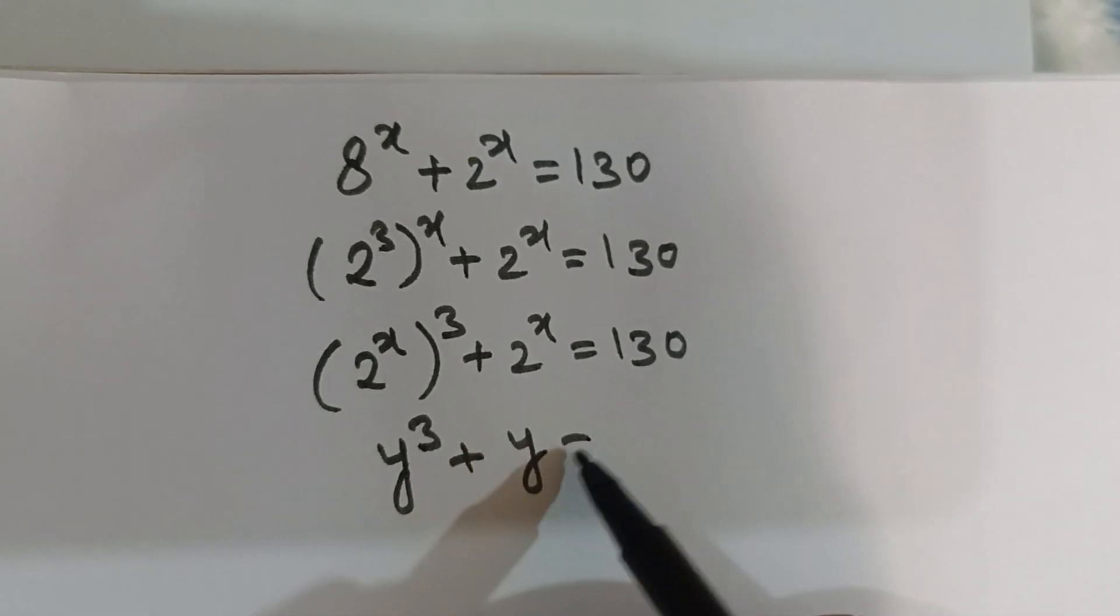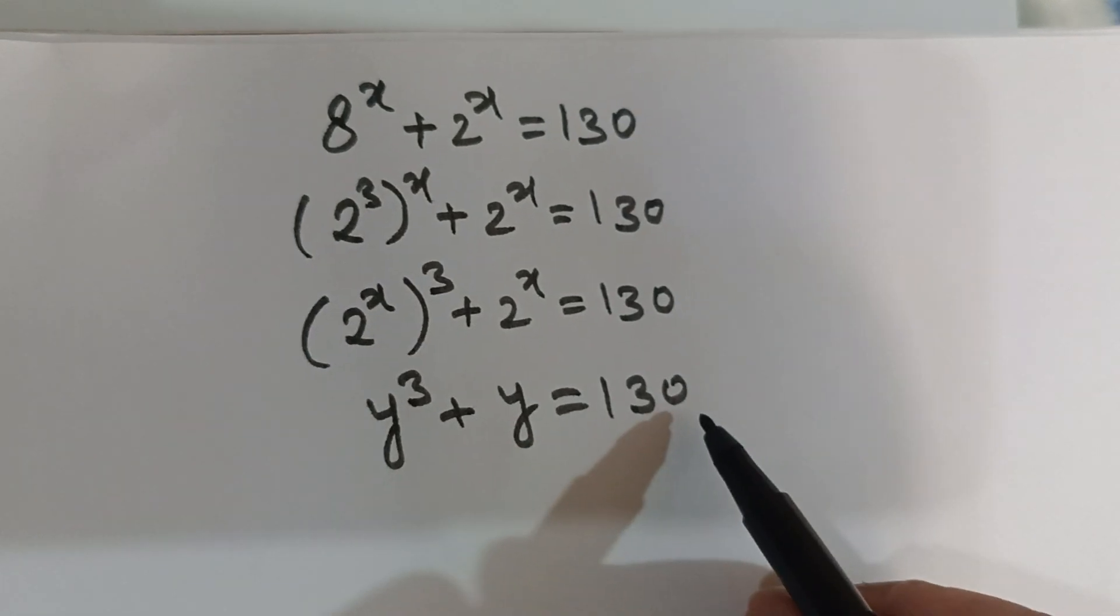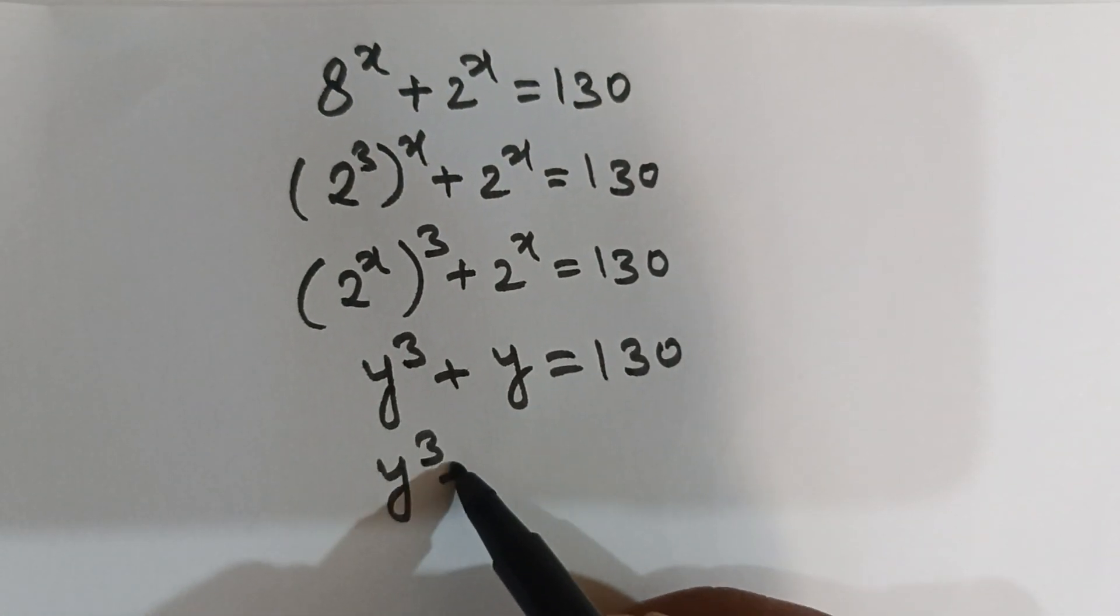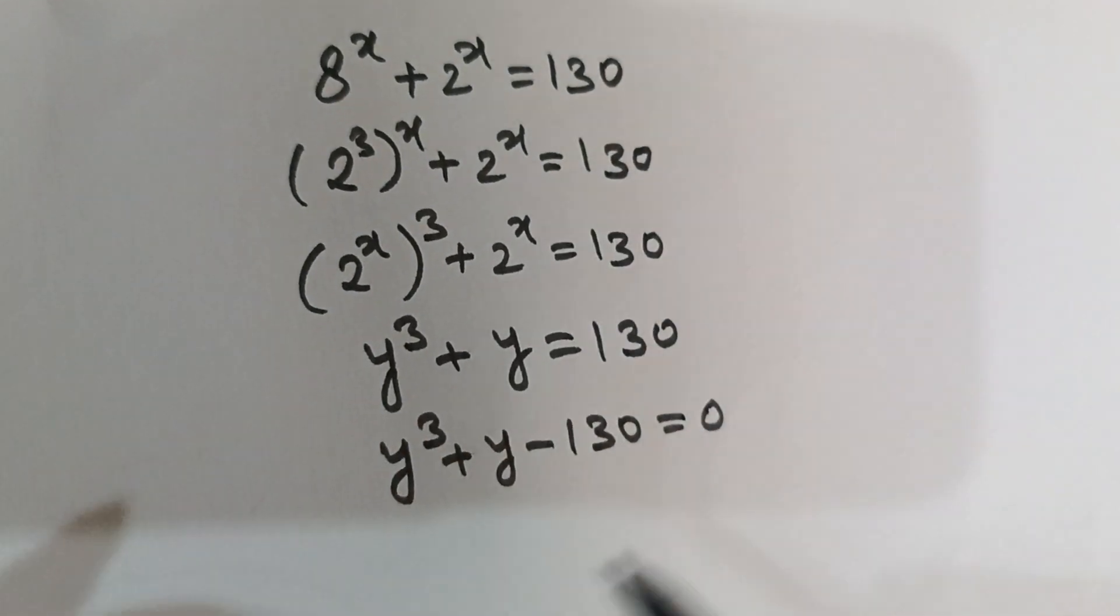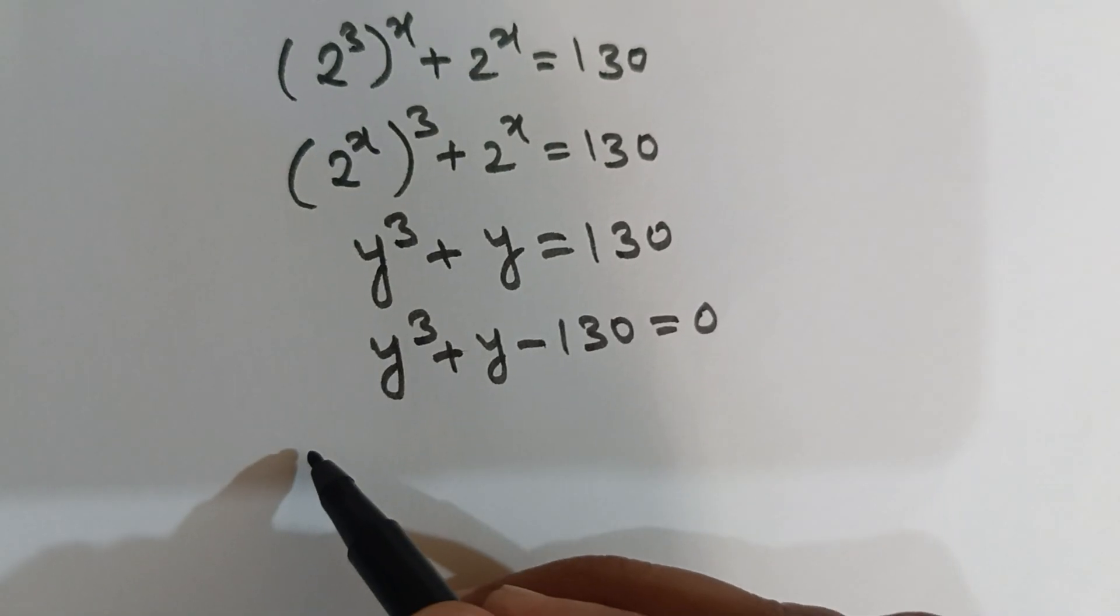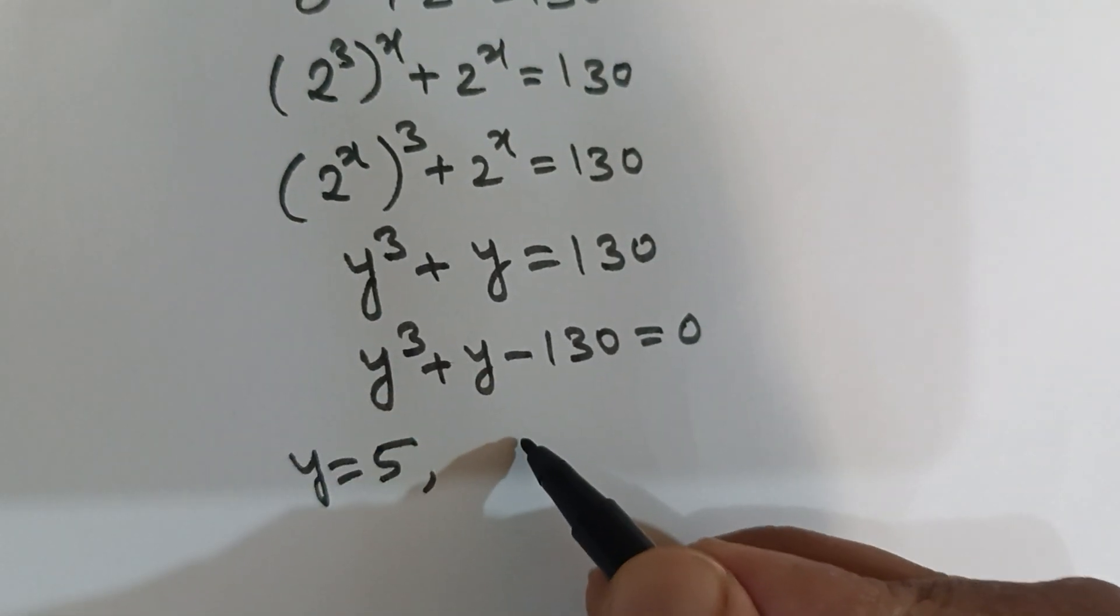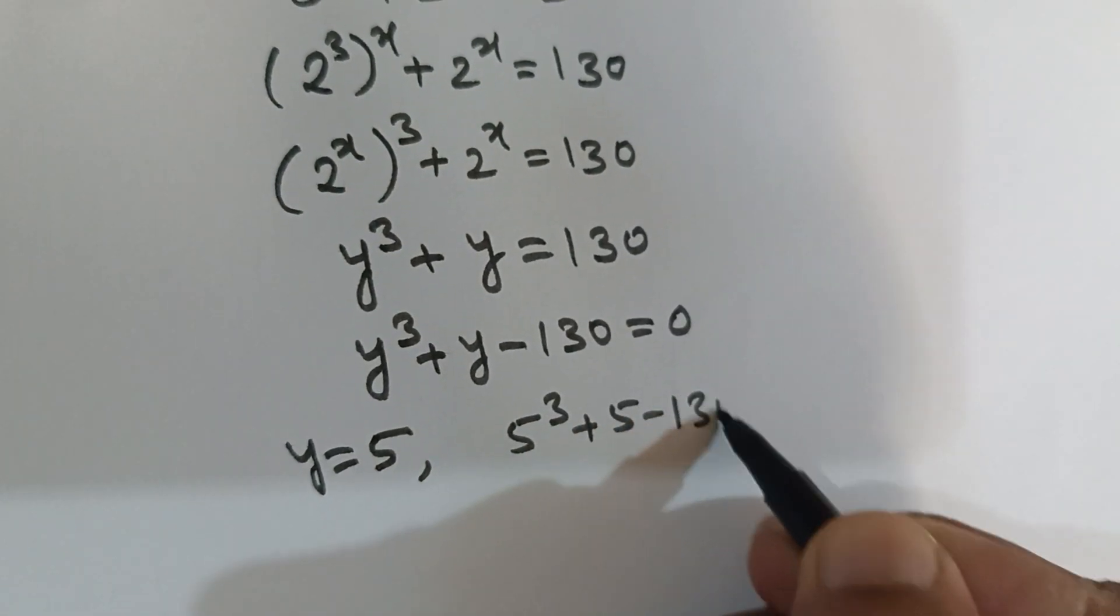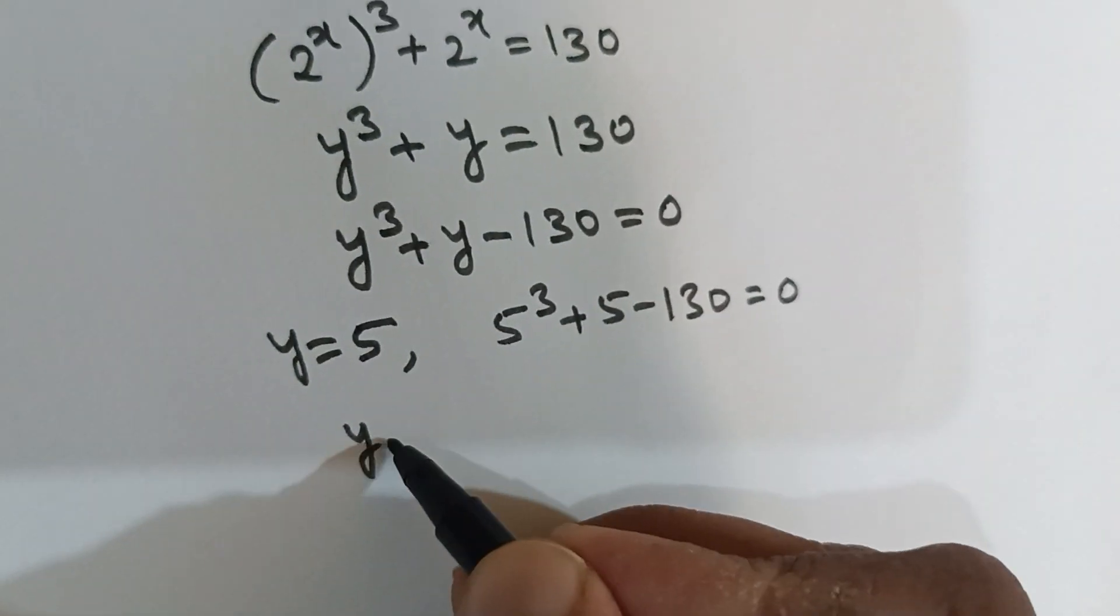y^3 + y = 130. To solve this equation, I observe that if I put y = 5, the equation gets satisfied. That means (y - 5) is a factor of the above equation.